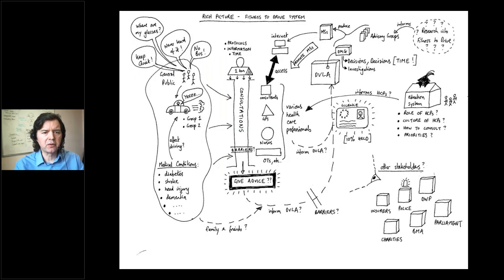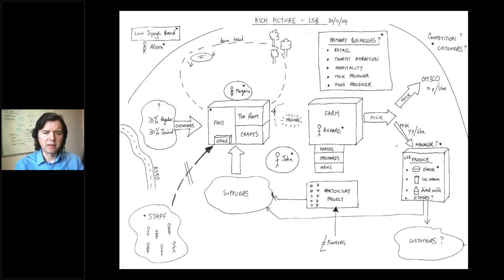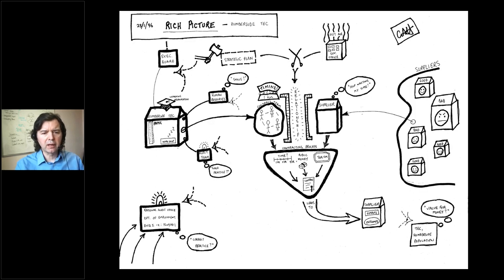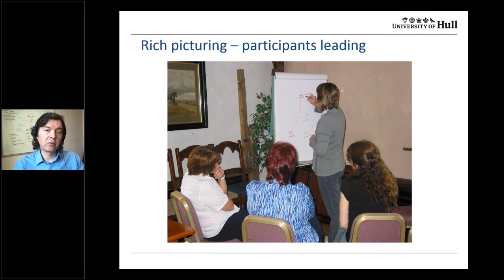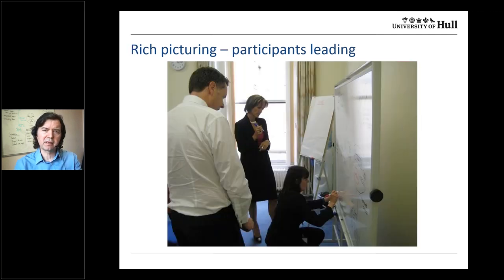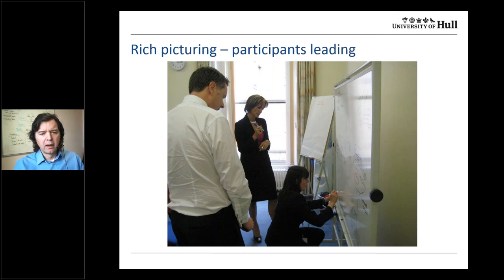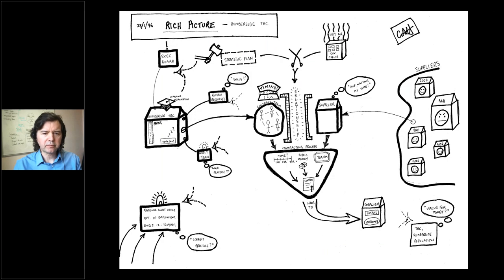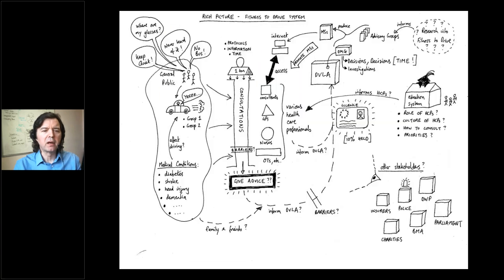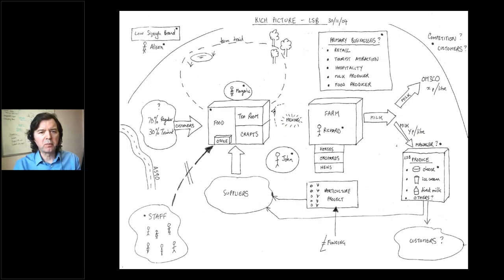Here are some examples: a rich picture drawn for a project at the University of Warwick with the Department of Transport, another one with a small business at Lancaster, and one from my PhD student days at the University of Hull. Here you can see four people working on a rich picture for a GP practice near Lancaster. They're using a flip chart, which is not ideal - too small. Ideally you want a nice big whiteboard with four participants working together, as shown here. The pictures I showed earlier had been tidied up for recording in a report.